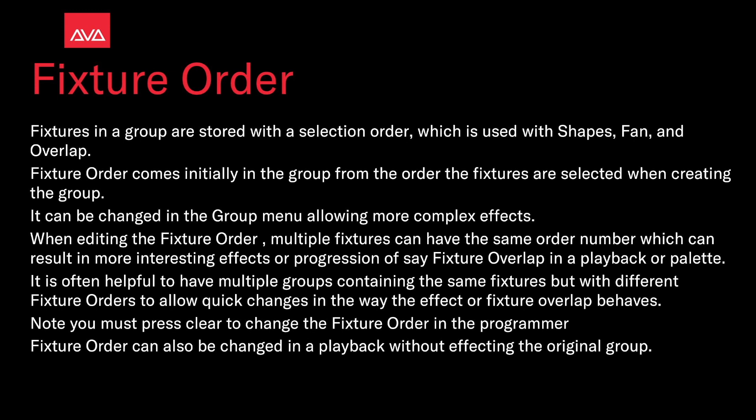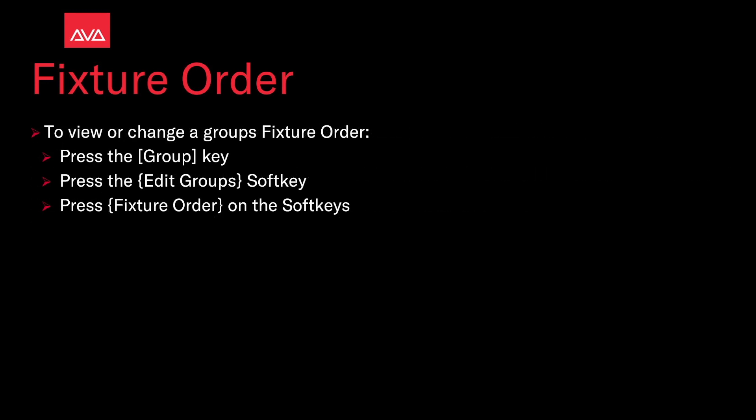Note that you must press Clear to change the Fixture Order in the programmer. Fixture Order can be changed in a playback without affecting the original group. To view or change the group's Fixture Order, press the Group key, press the Edit Group soft key, and press Fixture Order on the soft keys.